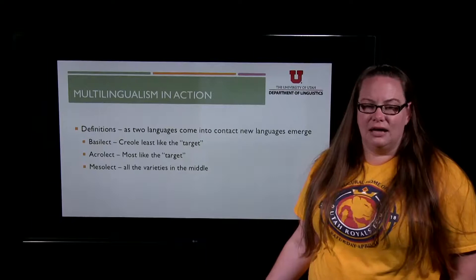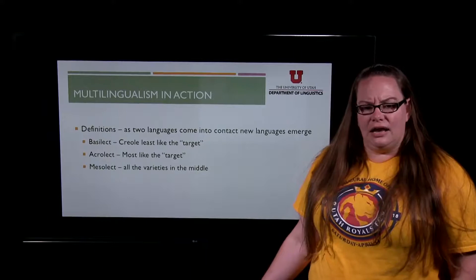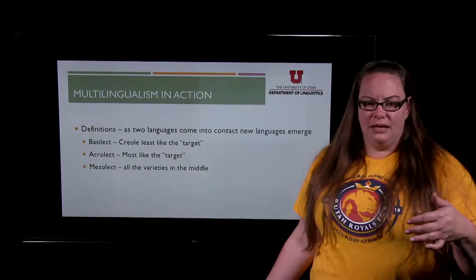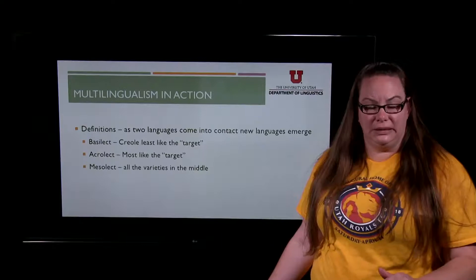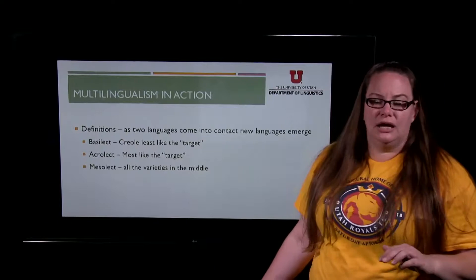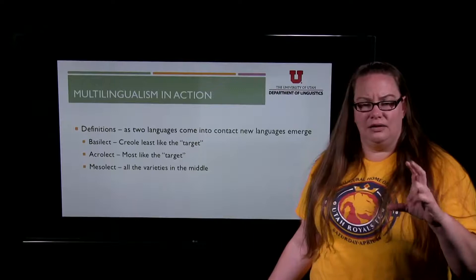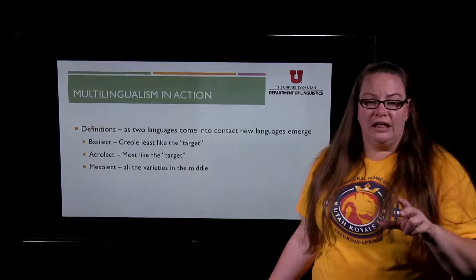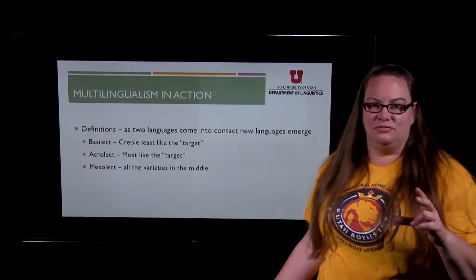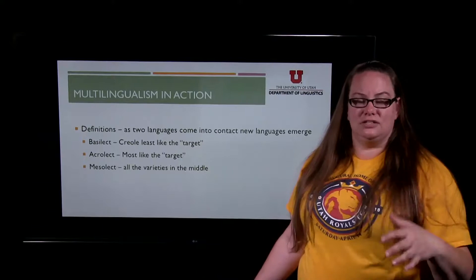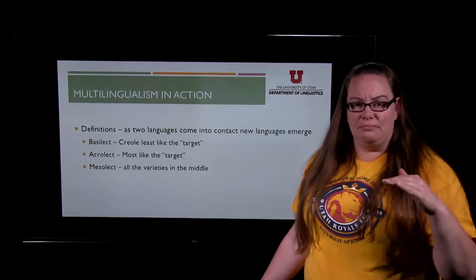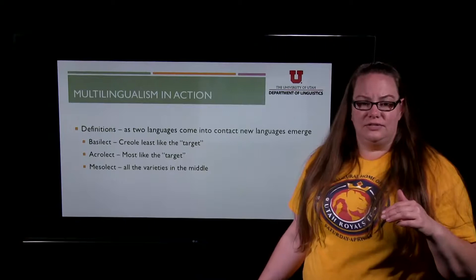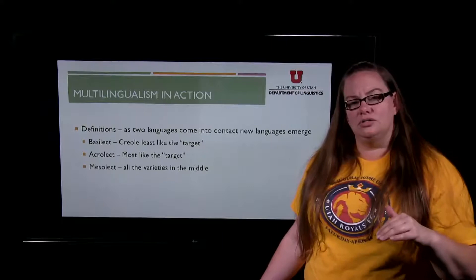The mesolect is all the varieties in between. So the acrolect sounds closest to the English that came in, while the basilect — often the lowest politically — is least like the superstrate language. Those two often come into conflict and people start to view one as better than the other. People from outside automatically view the acrolect as the better language because it's easiest to communicate with. In between the basilect and the acrolect there can be many different varieties or dialects that vary from closer to the superstrate to closer to the substrate language.